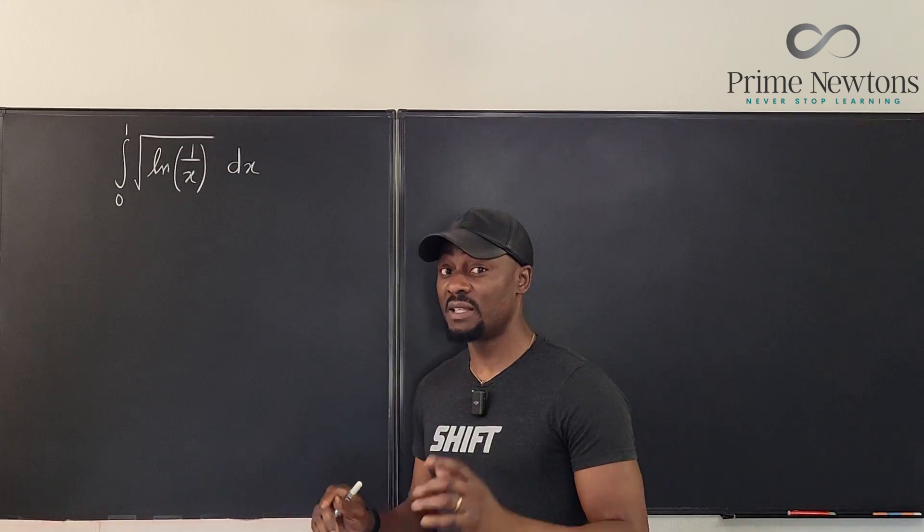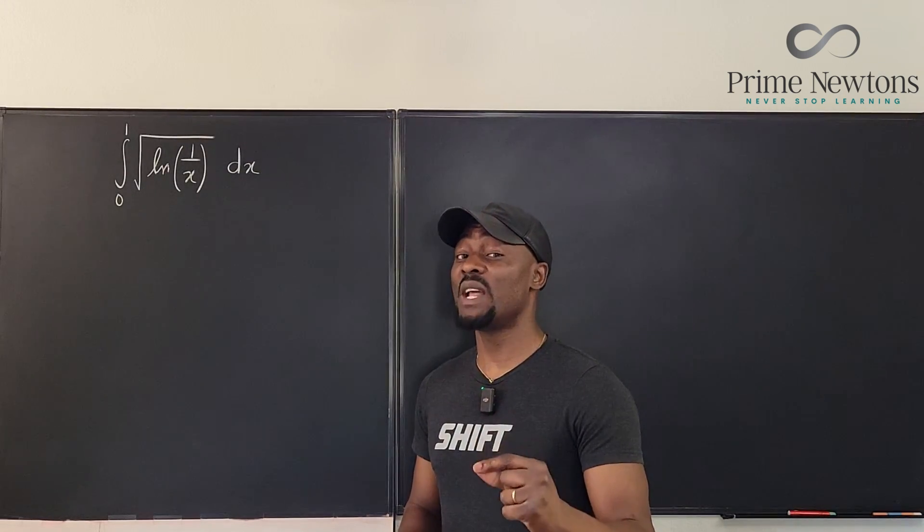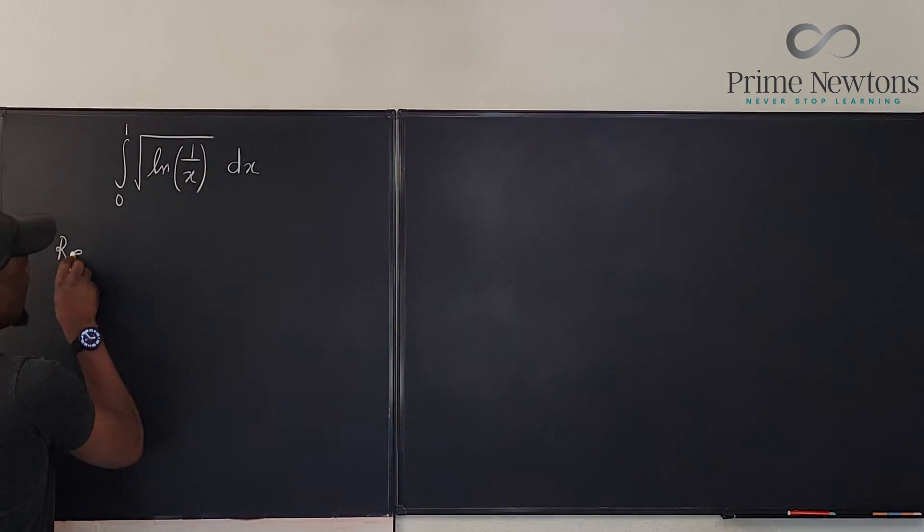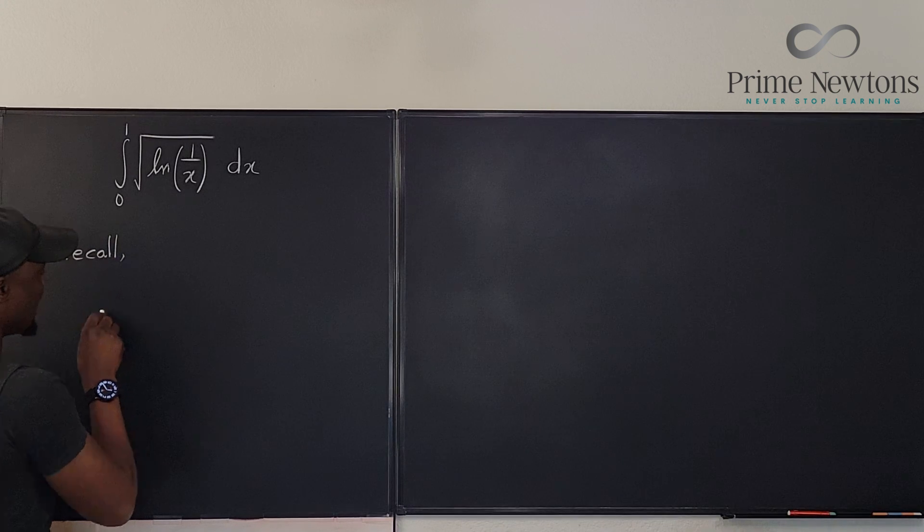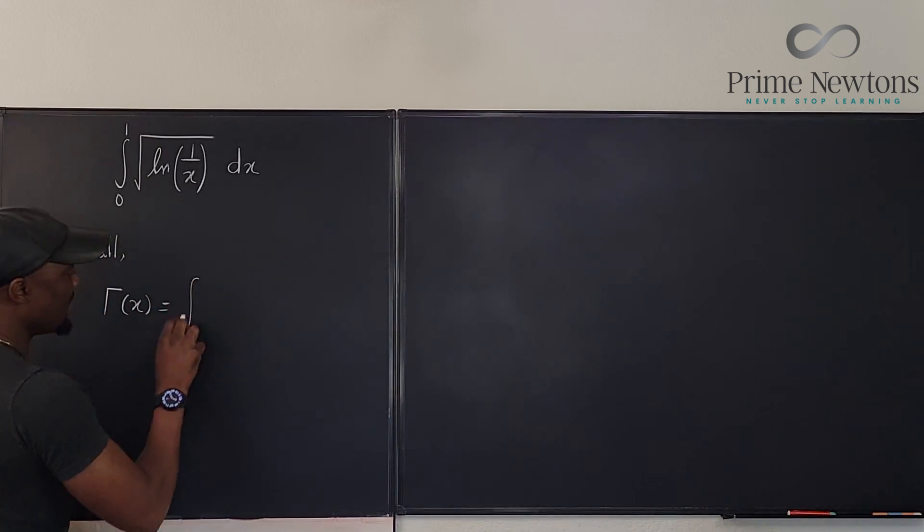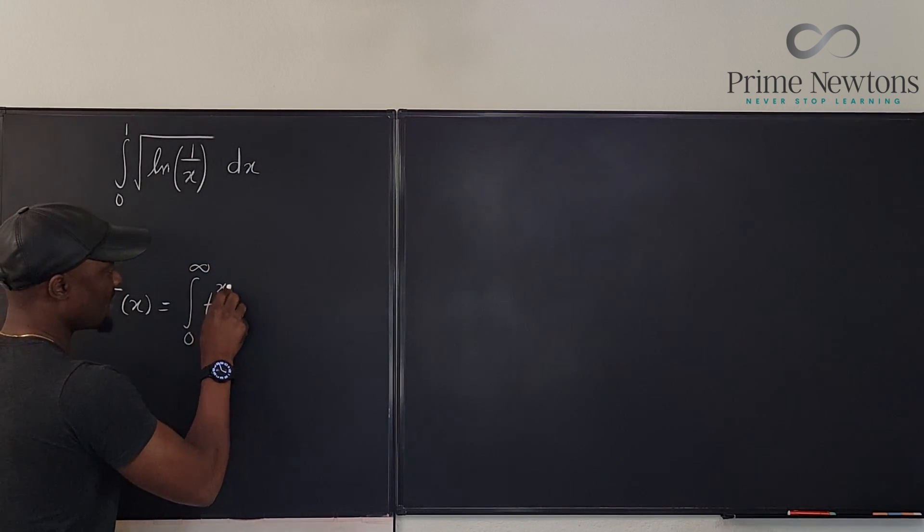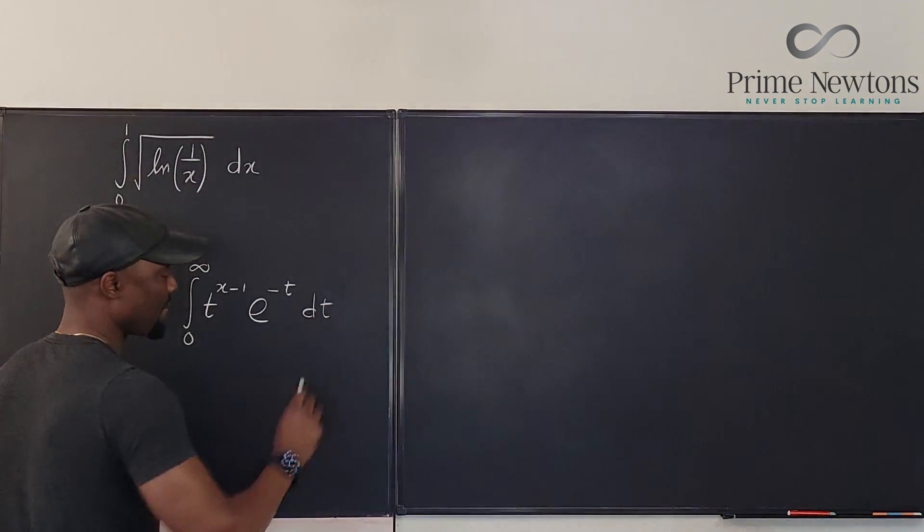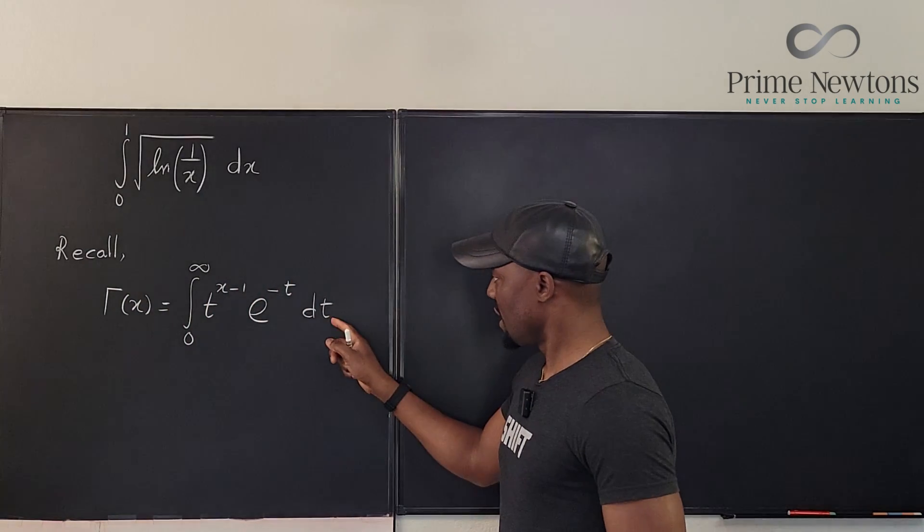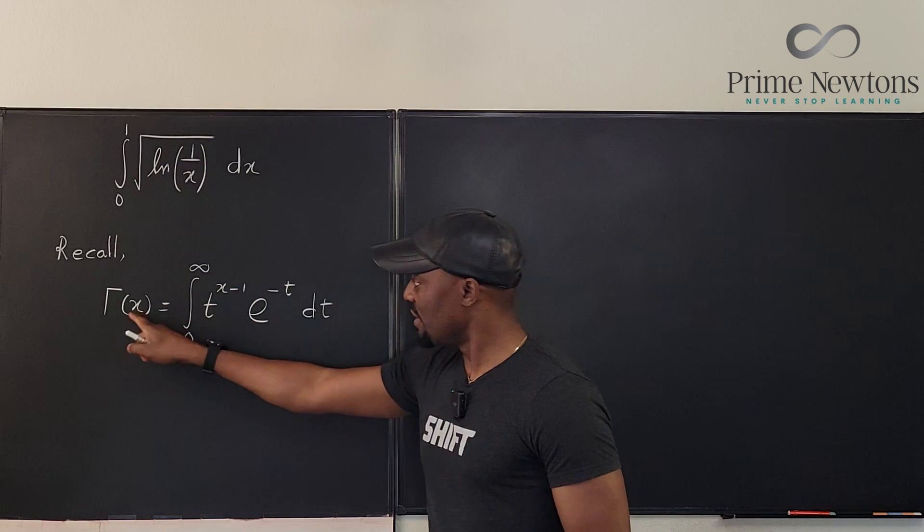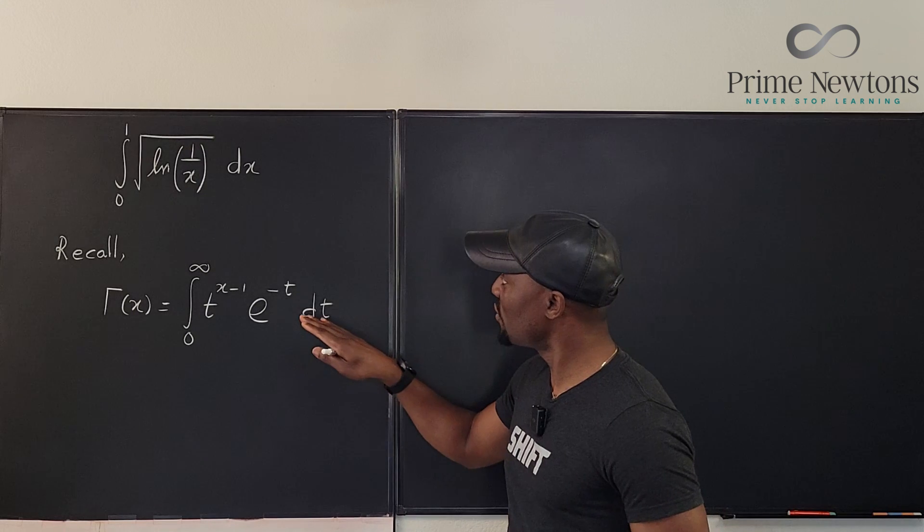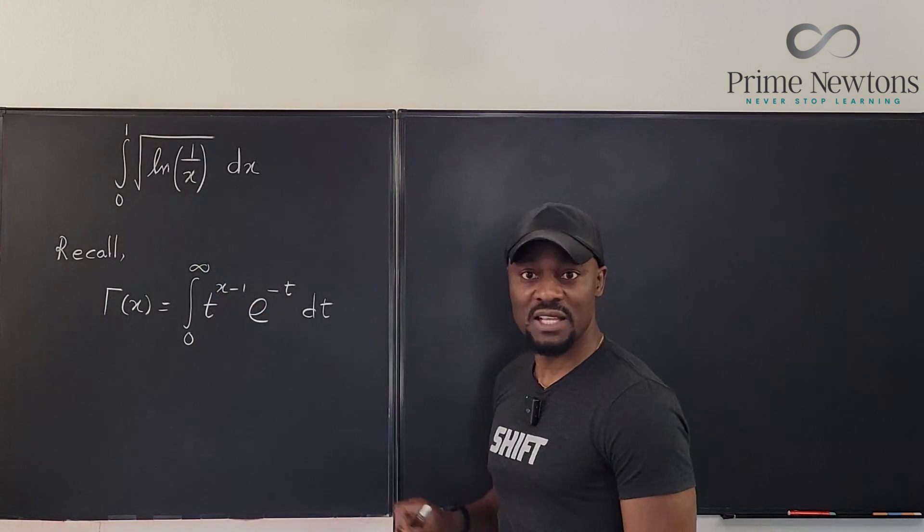The starting point of any problem like this is you knowing what the gamma function does and what it looks like. Recall that the gamma of x is the integral from zero to infinity of t to the x minus 1 times e to the negative t dt. So the integral is a function of t but if you want to take the gamma of any number it has to look like this. So your mission is to write this to look like this integral.